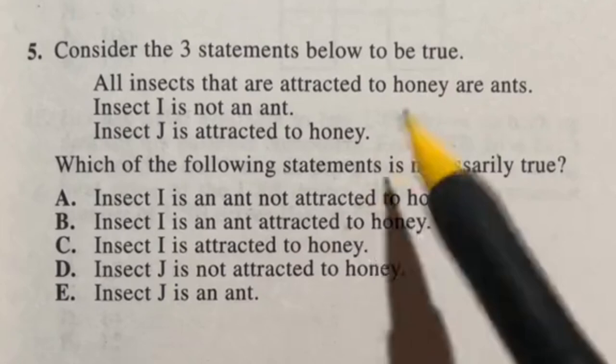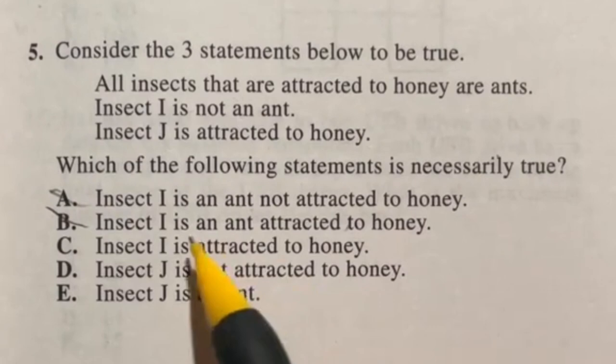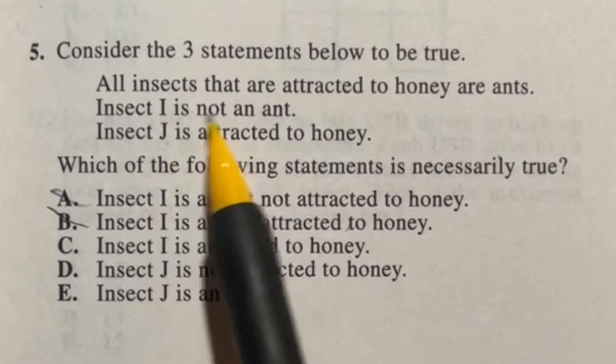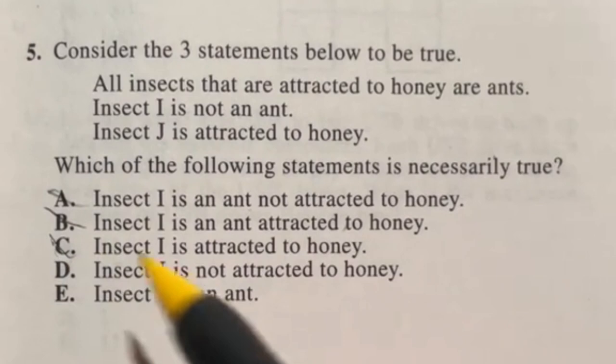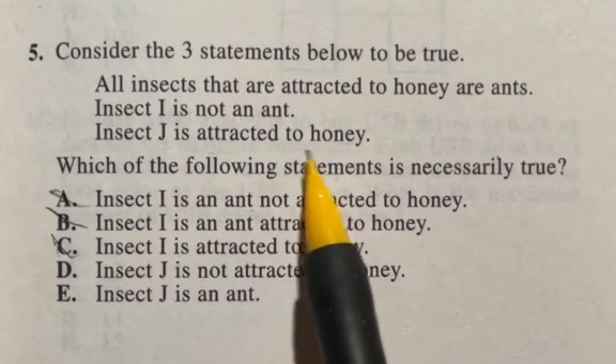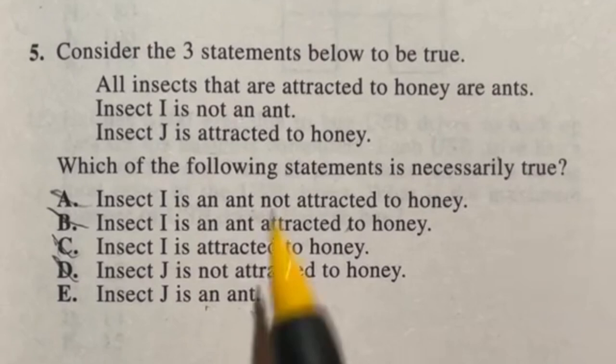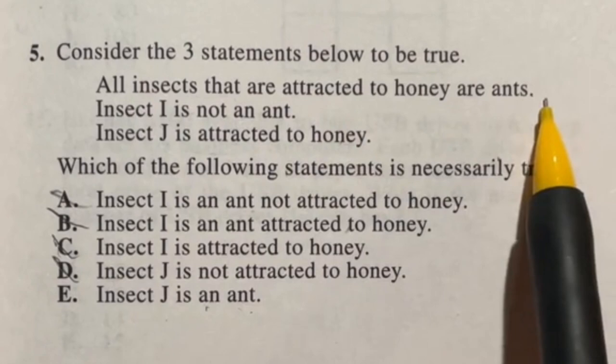Insect I is an ant. I'm done. Not an ant. I is not an ant. Insect I is attracted to honey. Well we know that all insects attracted to honey are ants. And insect I is not an ant. So that can't be true. C is out. Insect J is not attracted to honey. Well it says right here it is attracted to honey. So that's out as well. Man I hope E is correct. Insect J is an ant. What says insect J is attracted to honey. And we know that all insects that are attracted to honey are ants. So therefore this one is true.